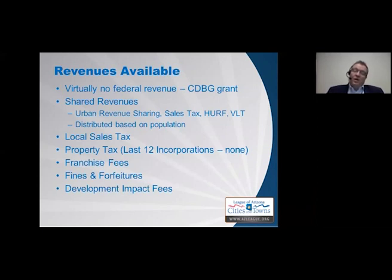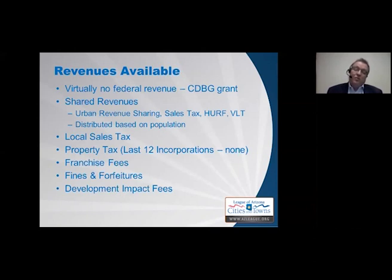The next form of shared revenue is the Highway User Revenue Fund, or HURF. This is the gas tax — 18 cents per gallon — collected and used specifically for road maintenance. Unlike urban revenue sharing and state sales tax, which can be used for any public purpose and go into the general fund, HURF is dedicated in state law specifically to the maintenance of public roads and right-of-way, including repair, maintenance, and construction of streets, sidewalks, curbs, and gutters.